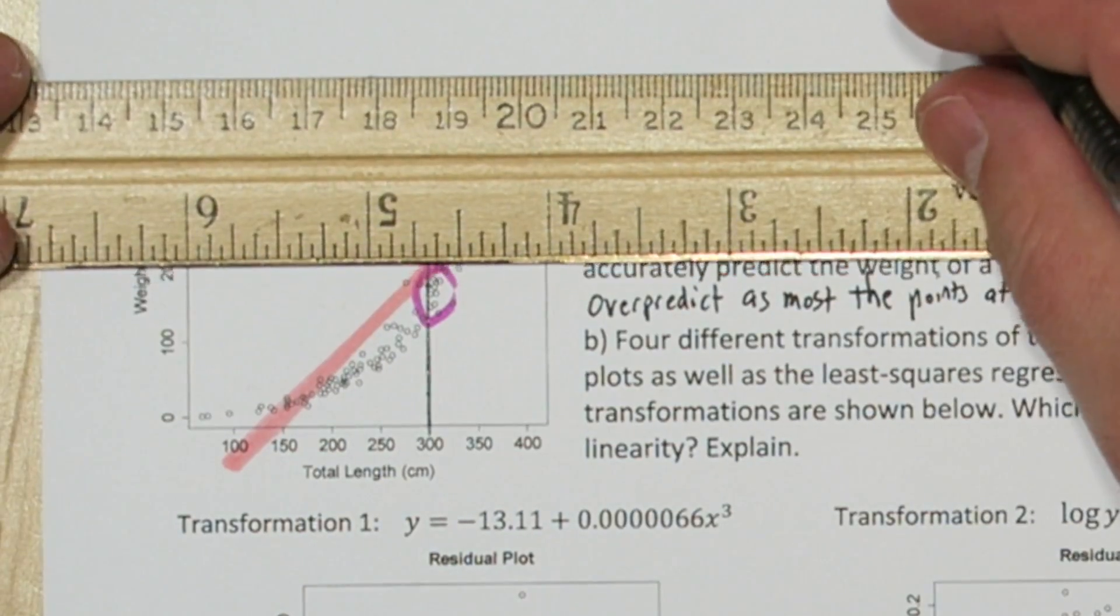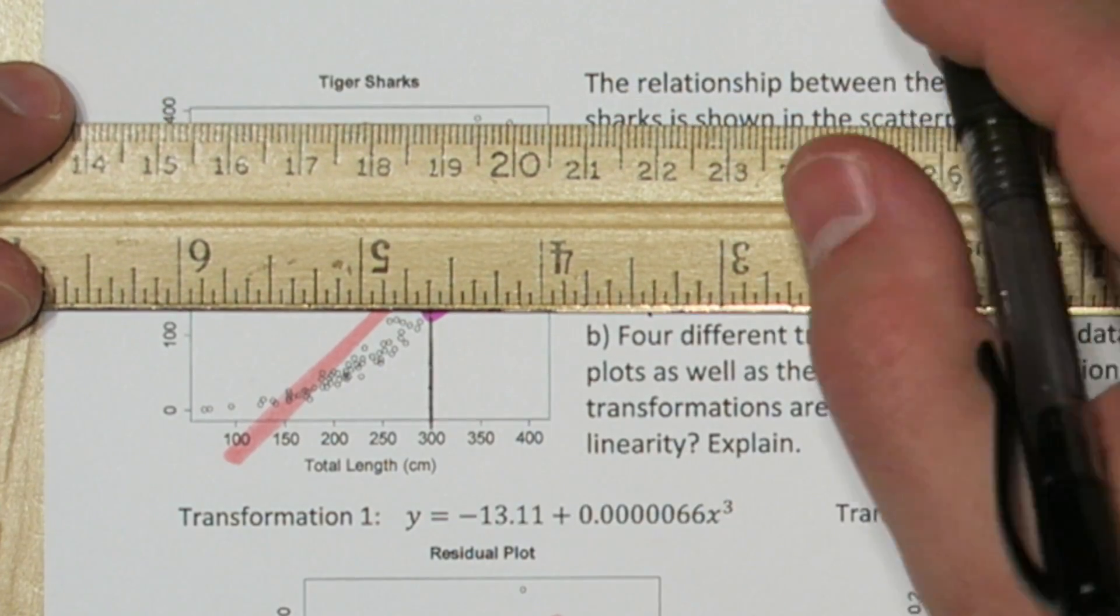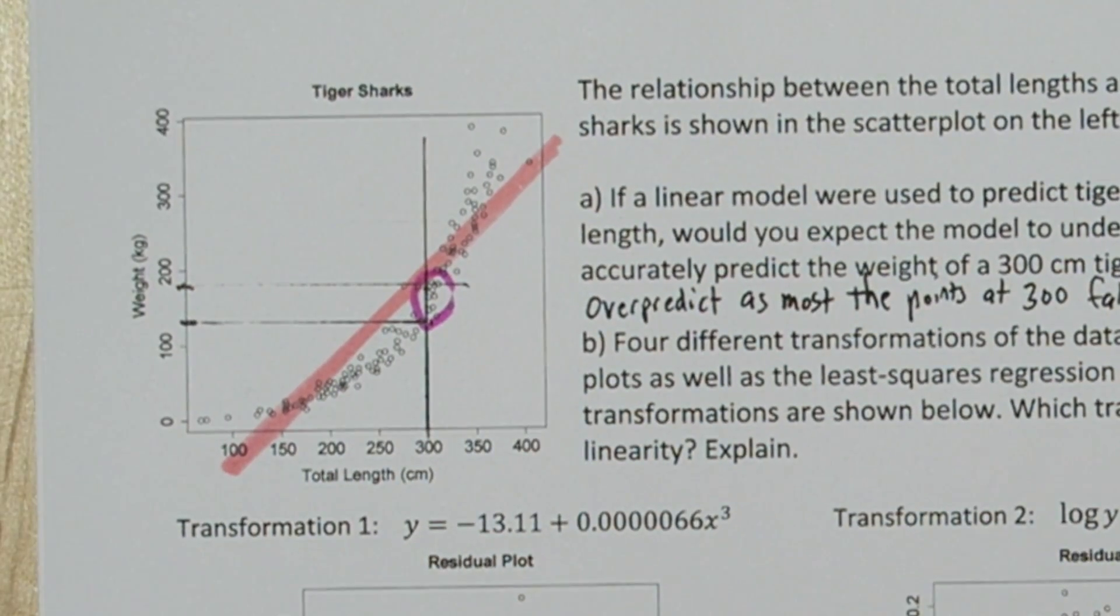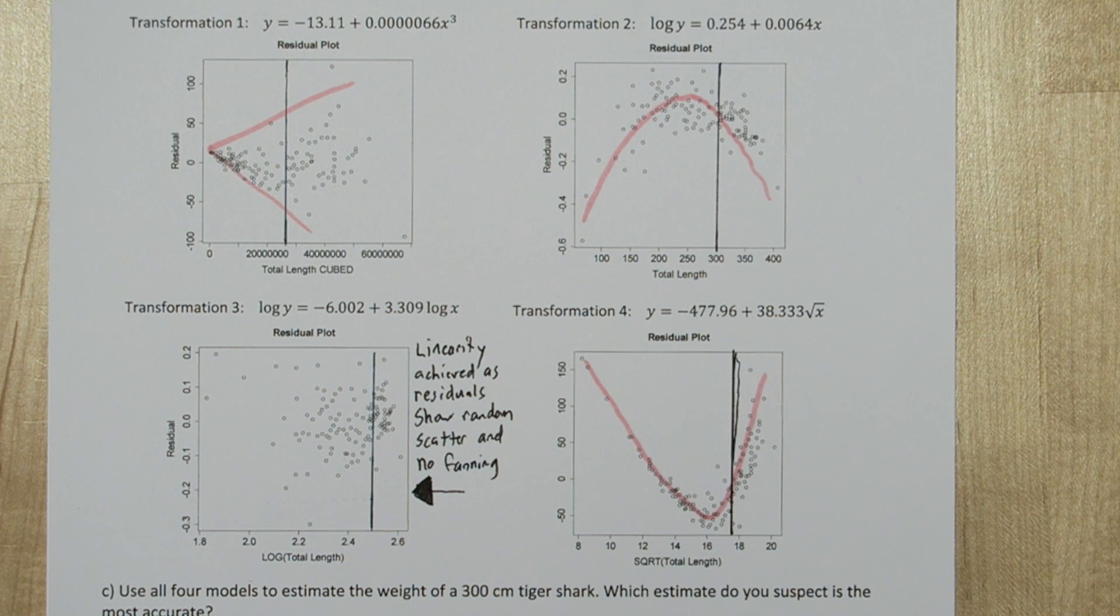If we go back to our original scatter plot, sharks that were around 300 cm in total length seem to have weights between about 130 and 180 kg. Also if we mark off where 300 or its equivalent transformed value is on each of our residual plots, it correlates to where residuals were quite small, near zero. So all four of these models are potentially quite accurate for sharks of length 300. But which model would work for sharks between 0 and 400 cm?